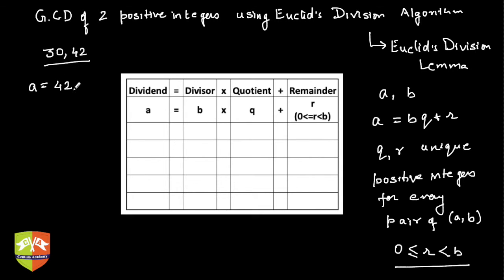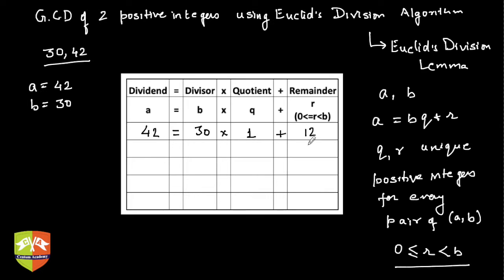Here, a is clearly the bigger of the two, that is 42, and b is 30. Let's now try and find out the GCD using the algorithm. So 42 equals 30×1, because 30×2 would be 60 which is more than 42, so 30 goes 1 time into 42 and the remainder is 12. We express 42 using Euclid's division lemma where Q is 1 and R is 12, which is clearly less than 30.